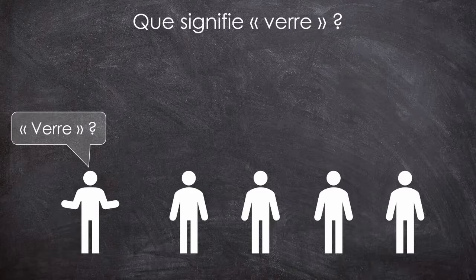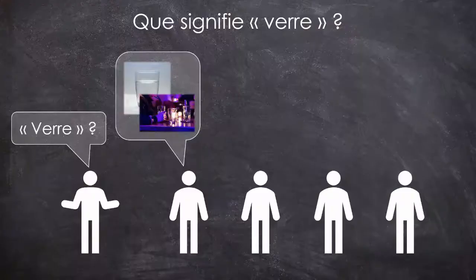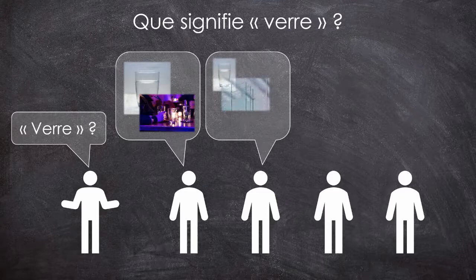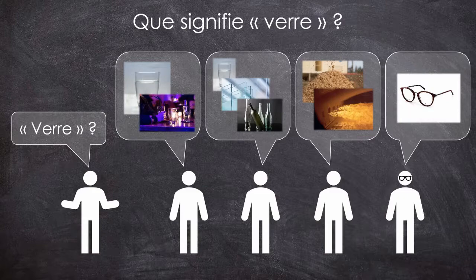Par expérience, si je pose cette question, il est fort probable qu'on me réponde en premier lieu qu'il s'agit d'un contenant à boisson, voire de la boisson elle-même. L'expression « aller boire un verre » n'étant pas une invitation à consommer le contenant. En cherchant plus loin, certains me diront qu'il s'agit d'un matériau transparent et cassant, utilisé pour les verres, les vitres et les bouteilles. Certains qui s'y connaissent un peu me diront même qu'il s'agit de sable fondu. Et ceux qui ont des problèmes de vue évoqueront certainement les verres de lunettes. Si on regarde dans un dictionnaire, on retrouve ces trois axes : matériaux, boissons et pièces optiques, entre autres.